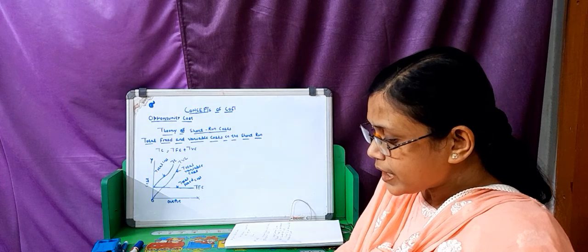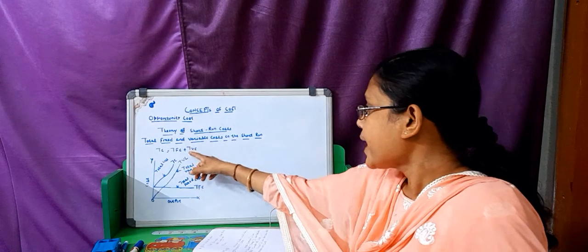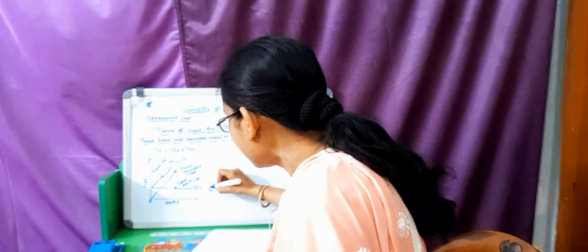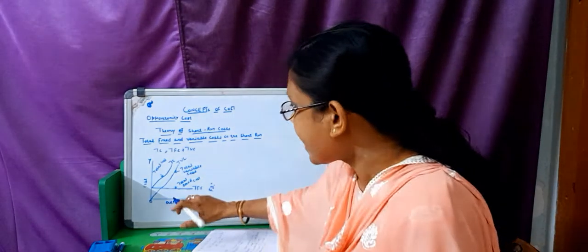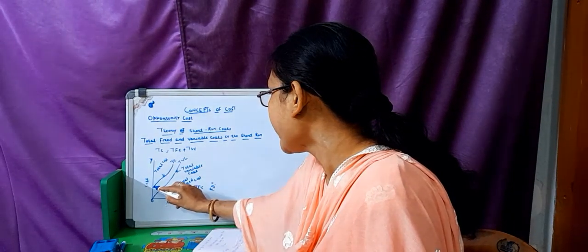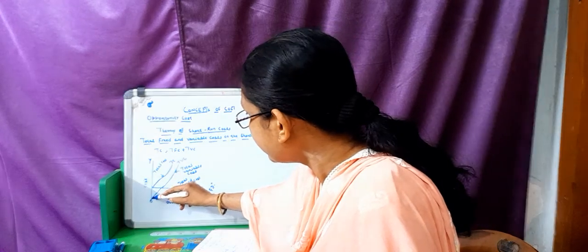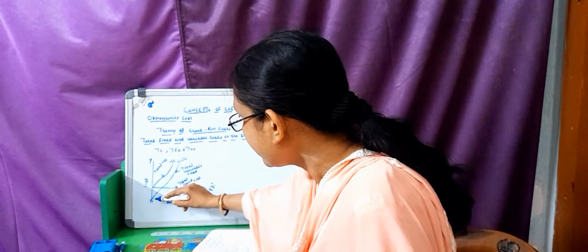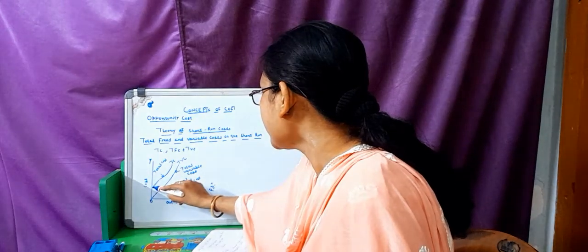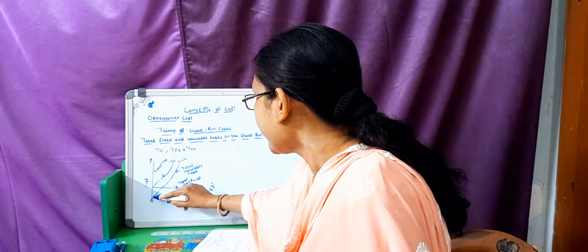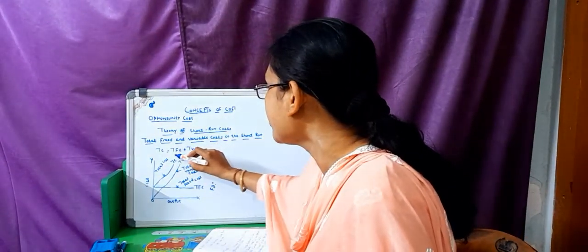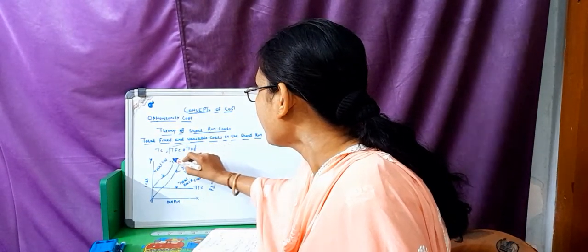The total cost of a business is the sum total of total fixed cost plus total variable cost. In this figure, the OX axis represents output and the OY axis represents cost. The horizontal line represents total fixed cost. The curve rising from the origin represents total variable cost, and the upper curve shows the total cost, where total cost equals total fixed cost plus total variable cost.